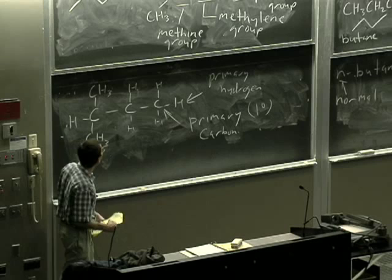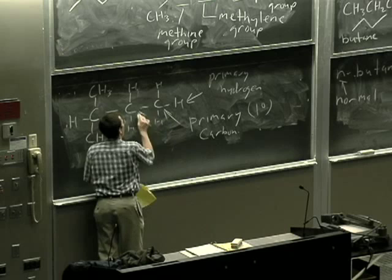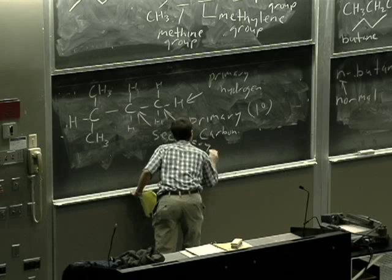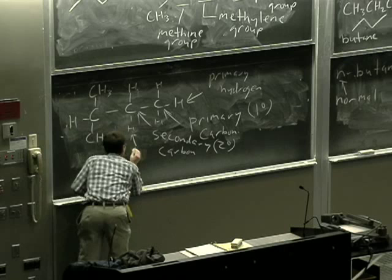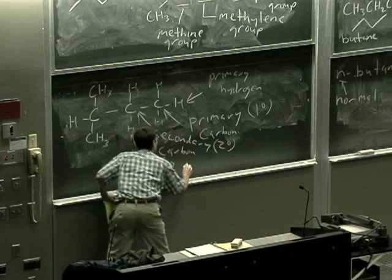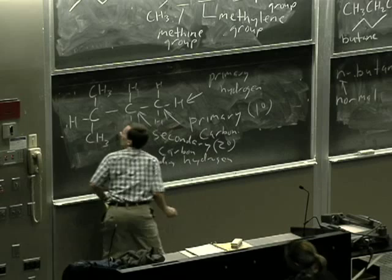Carbon with two carbons attached is a secondary carbon. So again, we'll use 2° as the abbreviation. And in turn, the hydrogen is a secondary hydrogen.